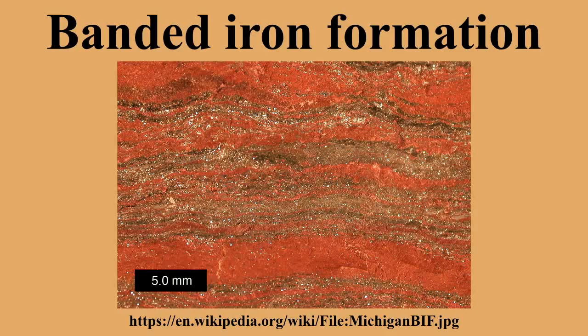Banded iron formations are distinctive units of sedimentary rock that are almost always of Precambrian age. A typical BIF consists of repeated thin layers of silver to black iron oxides, either magnetite or hematite, alternating with bands of iron-poor shales and cherts, often red in color, of similar thickness, and containing microbands of iron oxides. Some of the oldest known rock formations, formed over 3,700 million years ago, include banded iron layers.